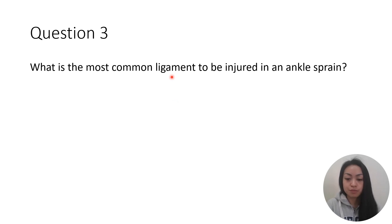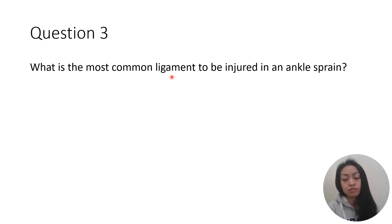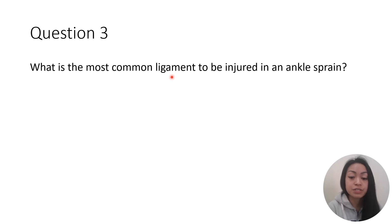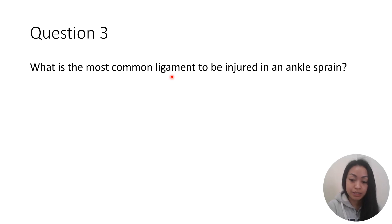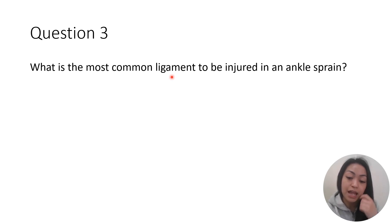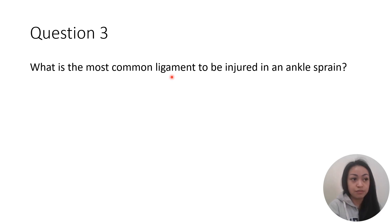Question 3: What is the most common ligament injured in an ankle sprain? The most common ankle sprain is inversion (lateral) ankle sprain. The most common ligament injured is the anterior talofibular (ATF) ligament — ATF: Always Tears First. Treatment is conservative: RICE, immobilization, rest.